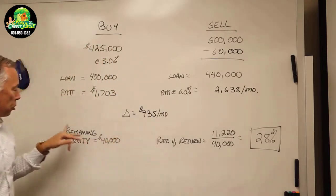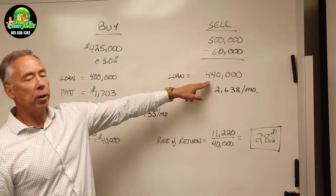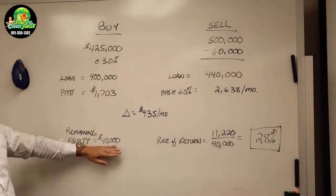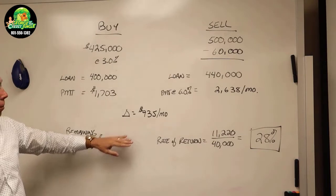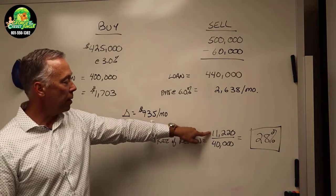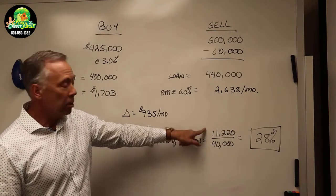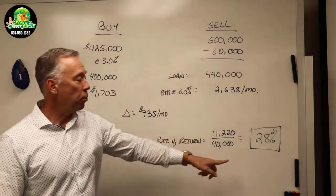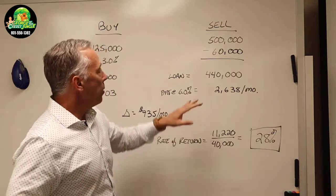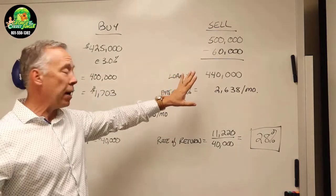You have this remaining equity of $40,000, which is the difference between what the buyer owes you and what you owe the bank. What's happening with that $40,000? Well, it's generating $935 a month or $11,220 per year. On a $40,000 investment, you are getting a 28% rate of return on your money. And by the way, this money here is tax free if you've been in the home for two of the last five years.